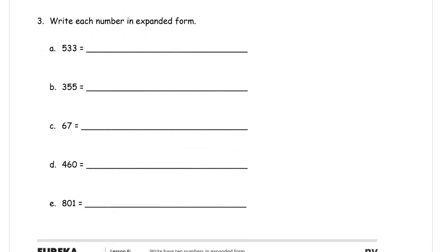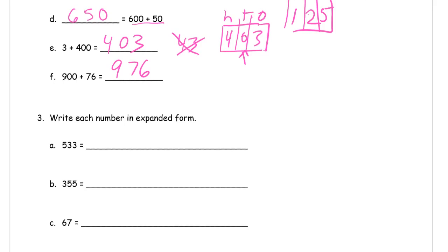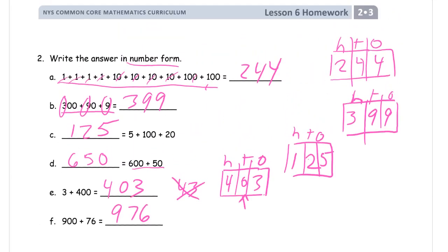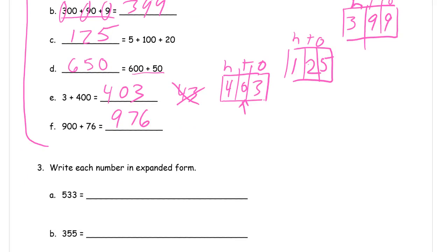And we have 976. And now we're writing these in expanded form. If you want to get fancy, you don't have to write them in hundreds, tens, ones order. But expanded form is just like we had up here. Now we're doing it backwards. On this number two section, they're giving us expanded form and we're writing it in number form. And now we're getting number form and we're writing it in expanded form.